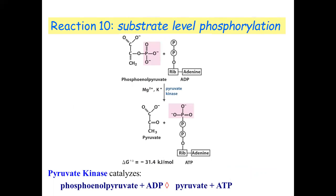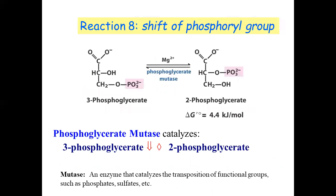Now, substrate-level phosphorylation again — reaction number ten. A phosphate is removed from phosphoenol pyruvate. A kinase enzyme is obviously involved because ATP and ADP are involved. Magnesium is a cofactor, and here we also have the addition of potassium.